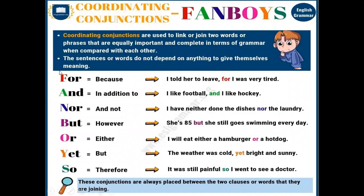Coordinating conjunctions are used to link or join two words or phrases that are equally important and complete in terms of grammar. The sentences or words do not depend on anything to give themselves meaning — they are independent. These conjunctions are always placed between the two clauses or words that they are joining. For: because, in addition. Nor: and not. But: however. Or: either. Yet: but. So: therefore.